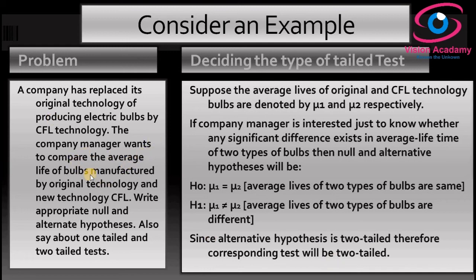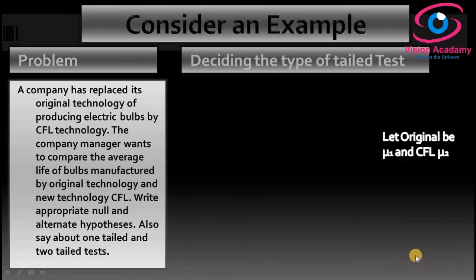In this example, the manager is interested to know the significant difference between CFL technology and original technology. Based on that, the null and alternative hypotheses were written. Concentrating on the alternative hypothesis, the 'not equal to' sign indicates the rejection region will fall on both sides of the sampling distribution. Therefore, the corresponding test is a two-tailed test.